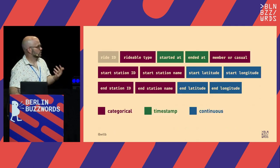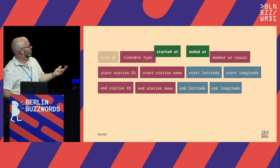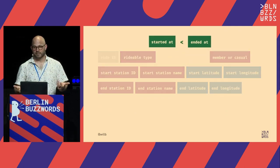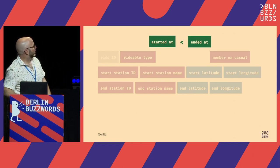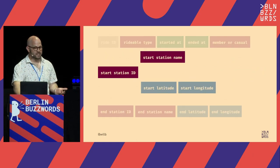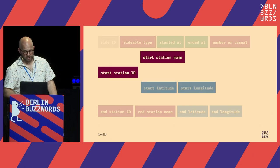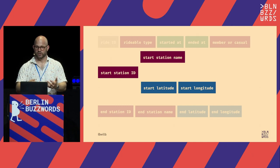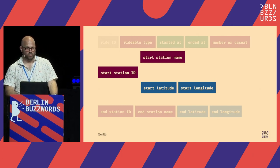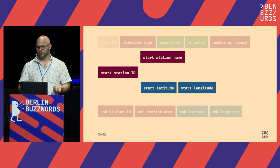We can still sample from the marginals, but we can do some things to make this process smarter. For one, we can ensure that our end time is always after our start time. Another thing we can do is look up the station name based on the station ID rather than sampling it, because there's going to be a correlation between those values. Similarly, a start station ID is going to correspond to a very small geographical area of where the ride ended.